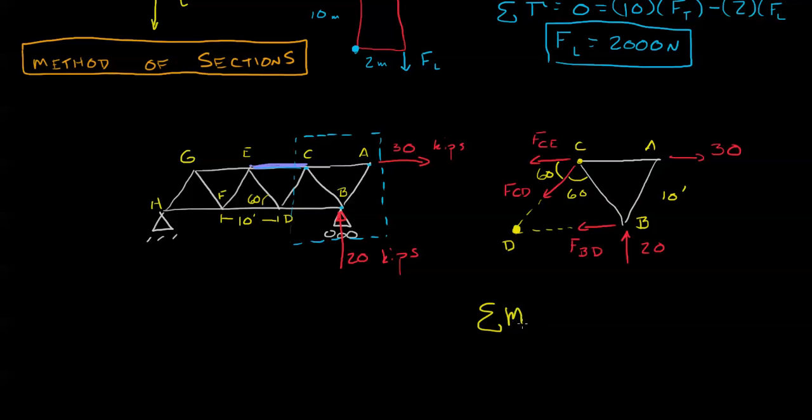Sum of the moment about D. We know that that's 10 feet times 20 kips. And then in the negative direction, the other force that goes around D is 30 kips. And that is at 8.7 feet. It's 8.7 feet if you do the cosine of 30.